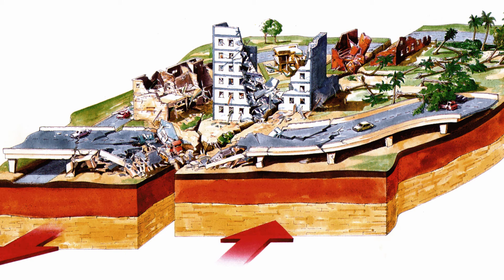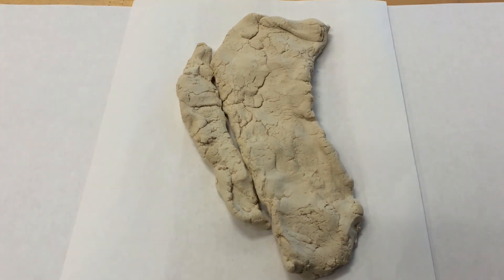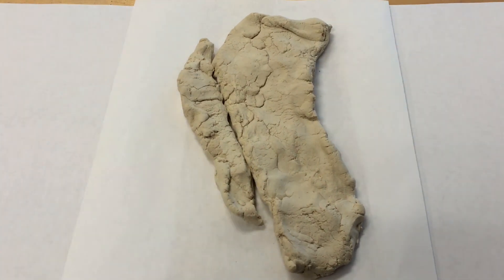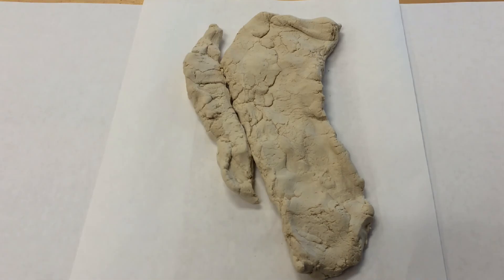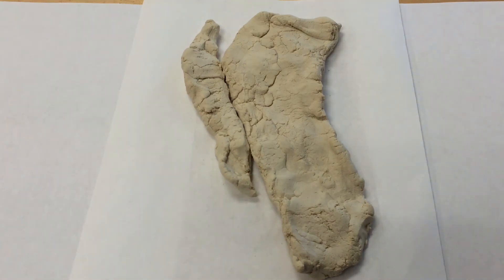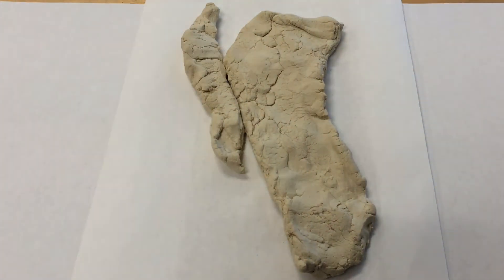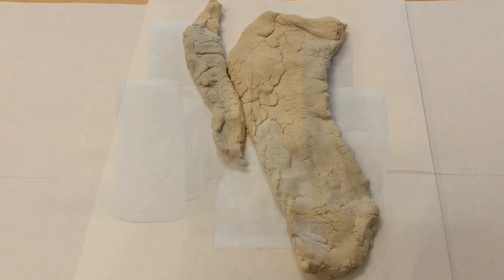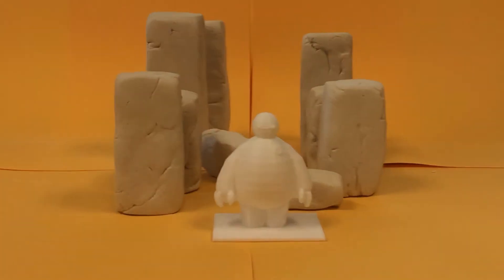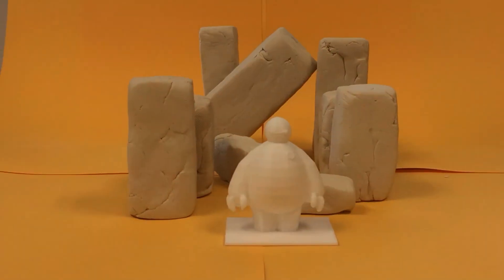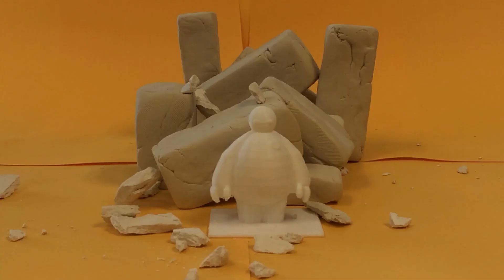One of the most famous transform boundaries exists in the San Andreas Fault. This boundary is located in California and causes annual earthquakes in the area. The western side of the boundary is gradually sliding north, causing the land to shift northward at about 6 centimeters per year. Eventually, the present cities of Los Angeles and San Francisco will be side by side.